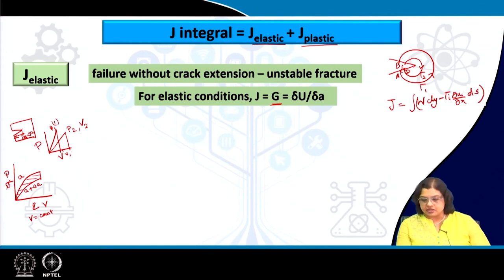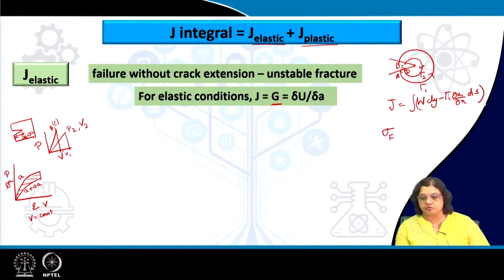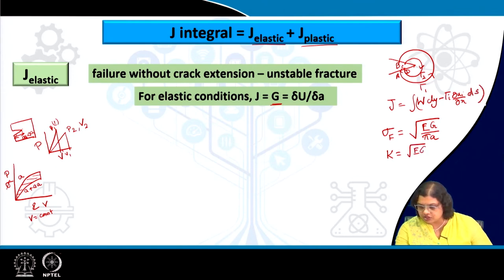The change in energy released can be determined from the difference in potential energy, giving the factor G. This can also be expressed using its relation with K, first introduced by Irwin when modifying the Griffith criterion. The fracture strength sigma_f determined by Griffith is equal to sqrt(EG / pi*A), and rearranging, sigma_f * sqrt(pi*A) equals K. So K equals sqrt(E*G), or equivalently G equals K² / E.